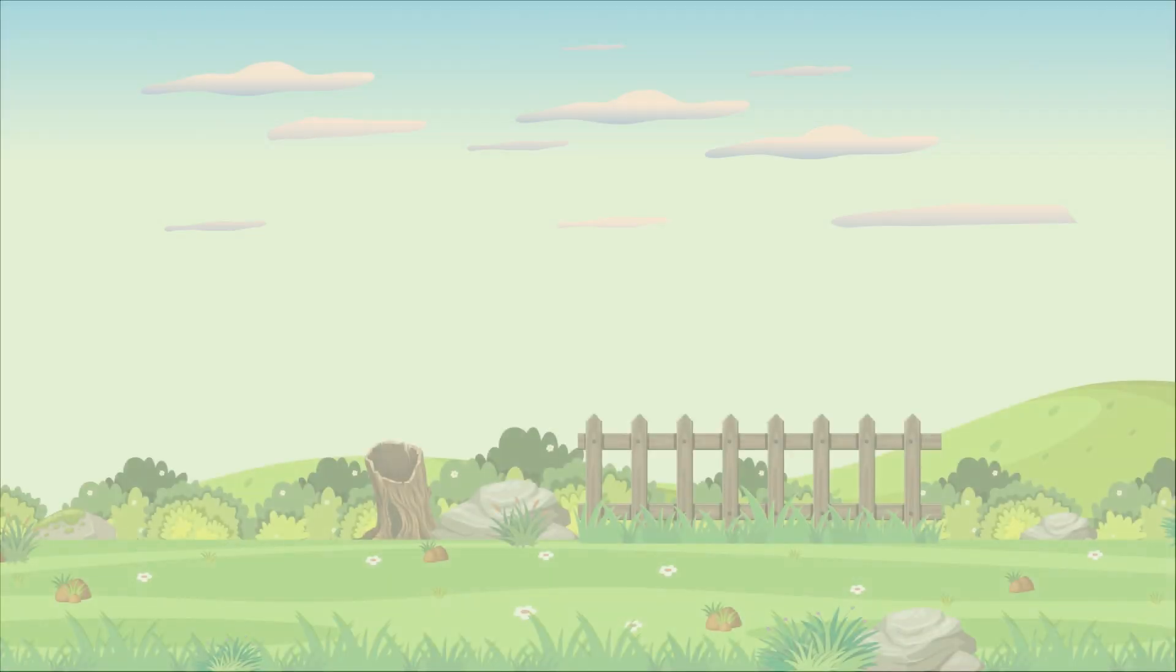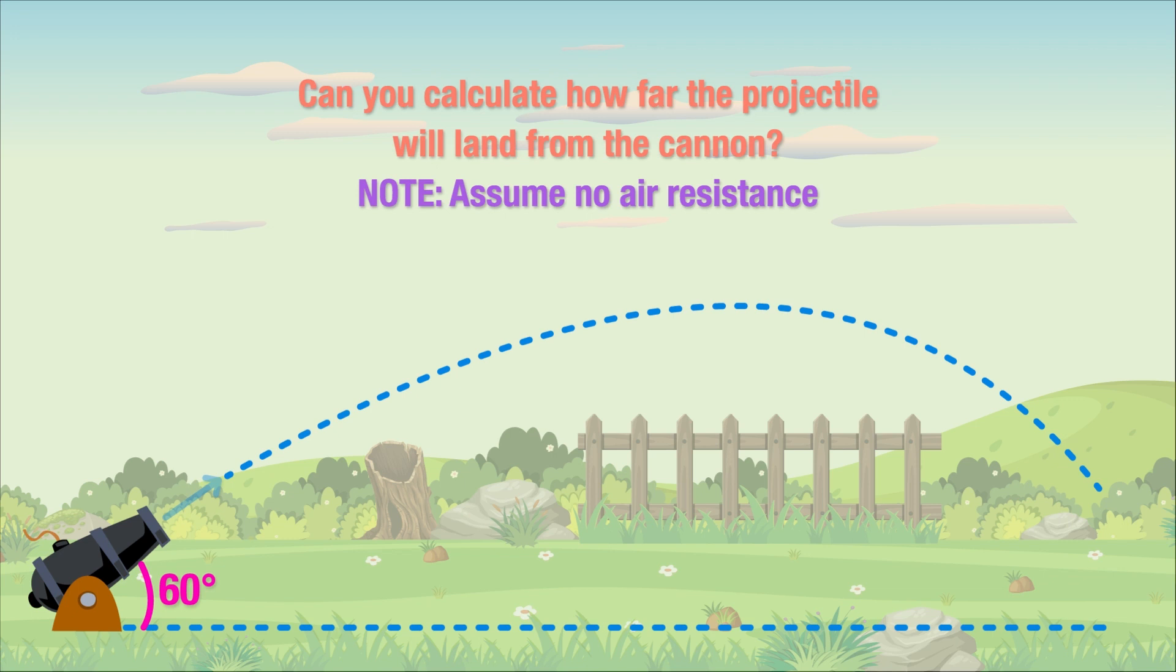Picture this. A cannon projectile is shot at an angle of 60 degrees from the ground. The projectile's initial velocity as it leaves the cannon nozzle is 250 meters per second. Using this information, can you calculate how far the projectile will land from the cannon? We need to assume that there is no air resistance and that the cannon is operating on flat land.